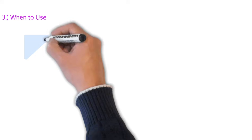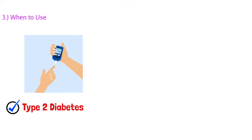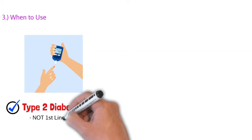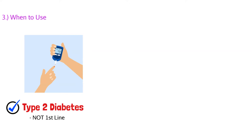Now that we understand how these work, let's talk about when we actually use them. They are used in type 2 diabetic patients — not type 1. Type 2 diabetic patients have insulin resistance, so you need to help bring glucose concentration down. Type 1 diabetic patients have a different pathology — they can't produce insulin — so these medications would not help them. SGLT2 inhibitors are not first-line for type 2 diabetes; the first-line medication is metformin. These are used as an add-on, adjunct therapy on top of metformin, though 90% of the time you'll use them for diabetes.